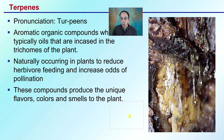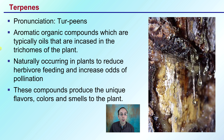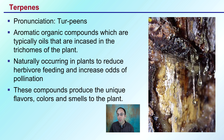Then we get to terpenes. Terpenes are aromatic organic compounds, which are typically oils that are concentrated in the trichomes of the plant. They naturally occur in plants to reduce herbivore feeding and increase odds of pollination. These compounds produce the unique flavors, colors, and smells of the plant, but are of course not limited to cannabis. Pine sap is a familiar example — that aroma associated with pine trees is an example of another plant producing these terpenes.